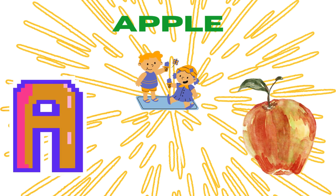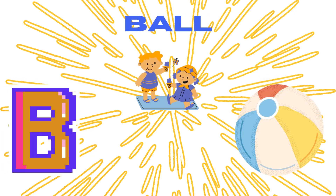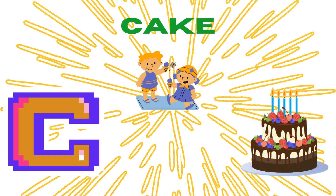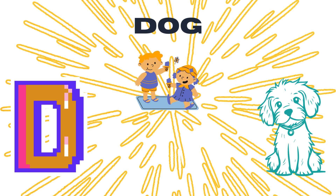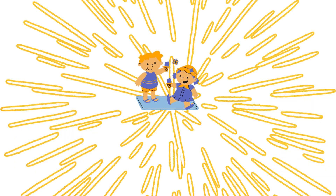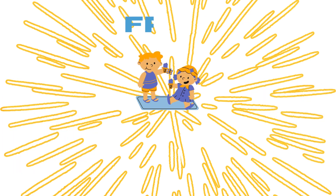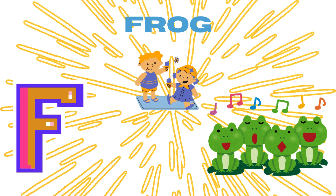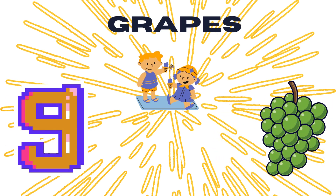A for apple, B for bun, C for cake, D for dog, E for elephant, F for frog, G for grapes.